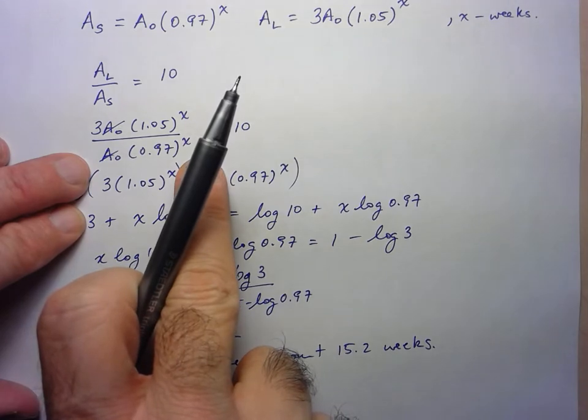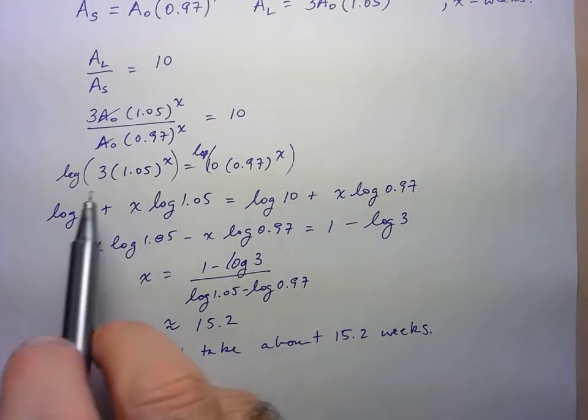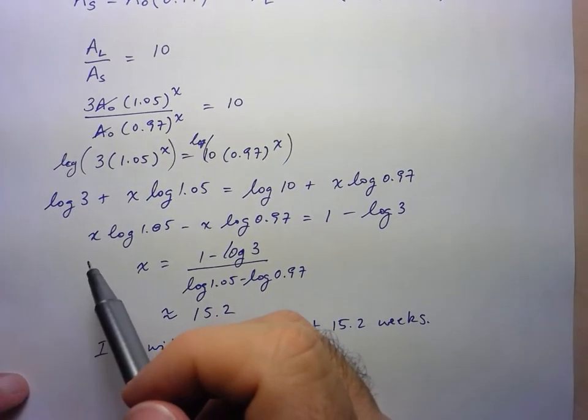And then from there once I simplified I realized that I had one of those scenarios where we have the equality of two powers with different bases, so we take log base 10 of both sides.